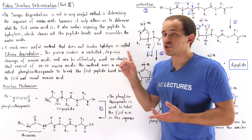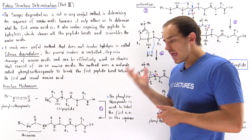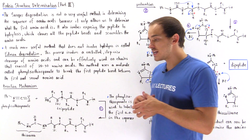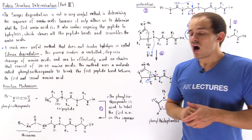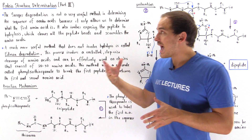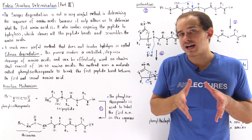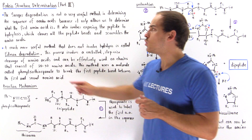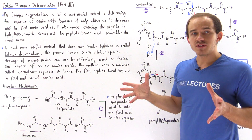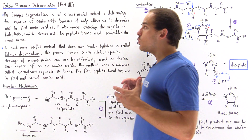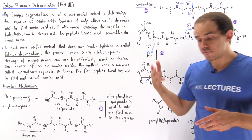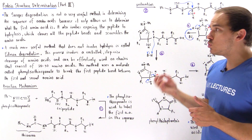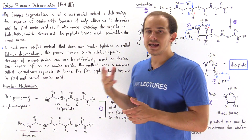Let's continue our discussion on how we determine the sequence of amino acids in a protein molecule. Earlier we discussed the Sanger degradation, which allows us to determine what the first amino acid is in our sequence. When we apply the Sanger degradation, we hydrolyze the entire protein and break it down into its constituent amino acids, so we have no way of knowing what the second, third, fourth, fifth, sixth, and subsequent amino acids are. The Sanger degradation is only useful in determining the first amino acid in our sequence.